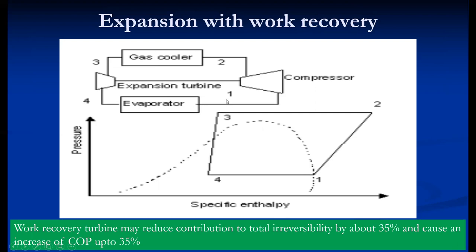Three to four is the expansion in the expander, and four to one is the normal evaporation process. The expansion device is replaced by an expander, and with that we get additional power. The expansion process follows an inclined line, but here it is isentropic expansion — a vertical line — so the point automatically shifts towards the left, increasing the refrigeration effect. In addition, it also saves work. So the increase in COP is marginal — almost 35% COP improvement can be achieved — but there are some practical difficulties because it handles partly liquid as well.